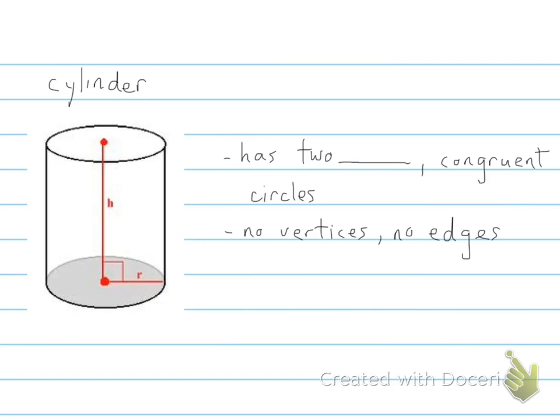The other thing that we're going to be studying is cylinders. So a couple of things about a cylinder. It does have two bases, and the bases are congruent circles. So you have a base here, and then a base here.